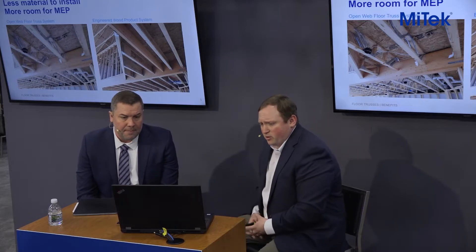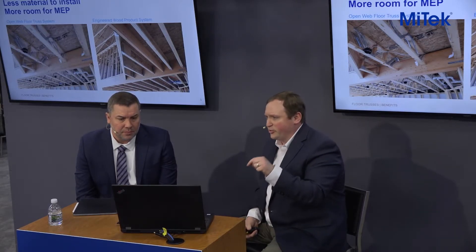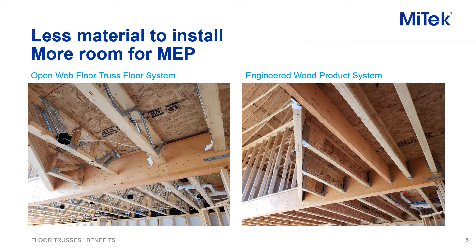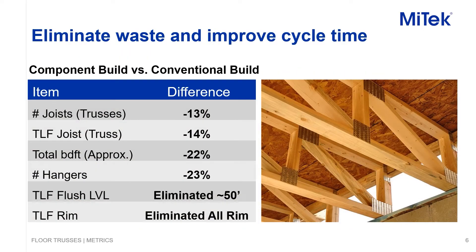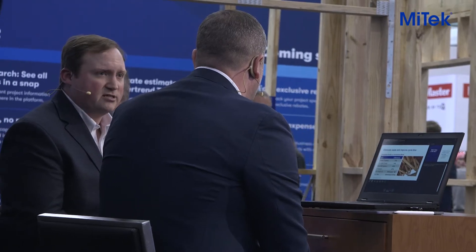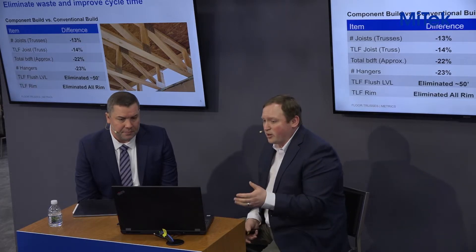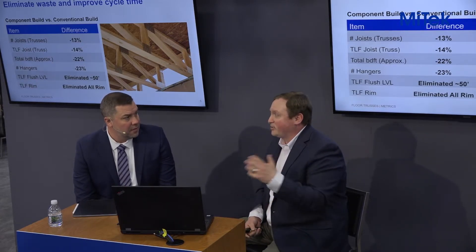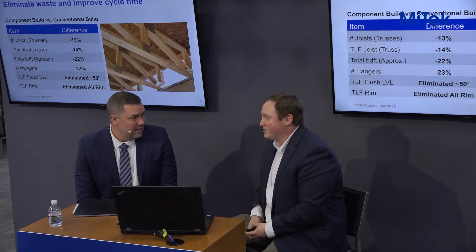Another thing to point out in that picture: look at all the hangers used to attach the EWP to the LVL. With floor trusses using top chord conditions, we eliminated $100 worth of hangers alone — plus the time to install them and measure spacing. We actually have numbers showing we reduced the total number of joints by almost 15%. The LVL on the rim is a very expensive, difficult-to-source product. By using top chord conditions or a ribbon condition and stretching sheathing up top, you remove a lot of waste and time. And LVL left on the job site on Friday is often not there on Monday.